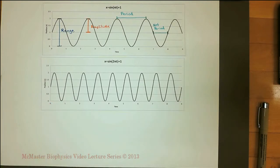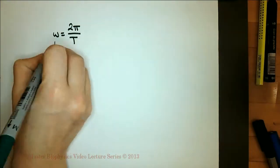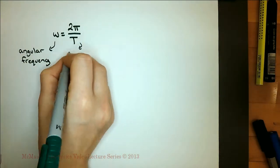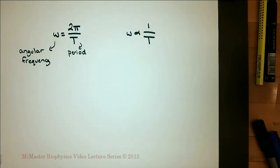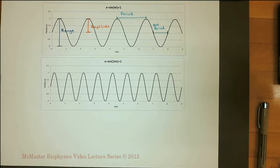The second curve has doubled the angular frequency of the first curve. Note that the angular frequency and the period are inversely proportionate. So the period is halved when the angular frequency is doubled.